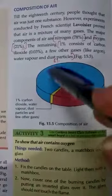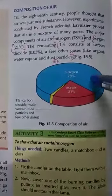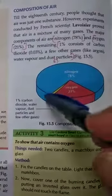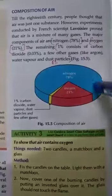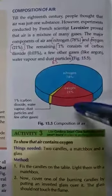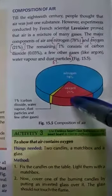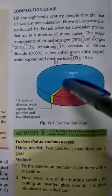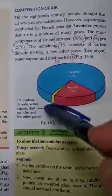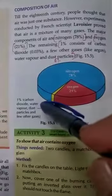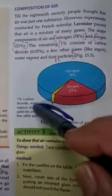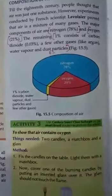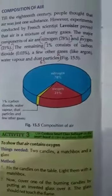So the composition of air in the atmosphere is 78% nitrogen, 21% oxygen, and the remaining 1% includes carbon dioxide, water vapor, dust particles, and a few other small gases.